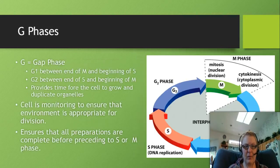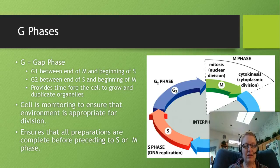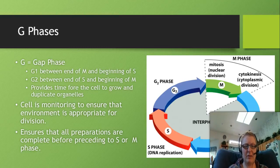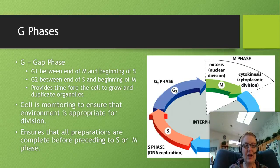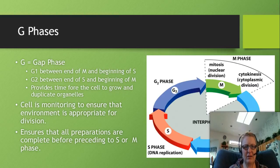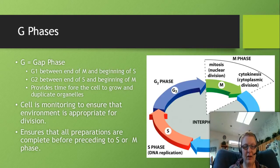The G phases - G stands for gap phase. G1 occurs between the end of M phase and the beginning of S phase, and G2 is between S phase and M phase. These phases allow time for the cell to duplicate many of its main components besides DNA - organelles, cell membrane, cytoplasm. The cell also grows a lot and monitors its environment to ensure it is prepared for division. These are the phases where conditions are checked before moving on, because we don't want to move into S or M phase unless everything is ideal.